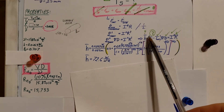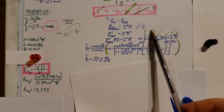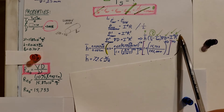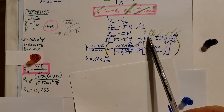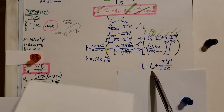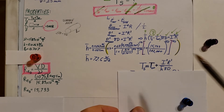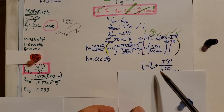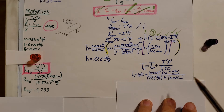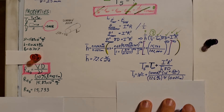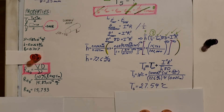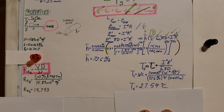Now that we have h, we go back and solve for Ts from the energy balance equation. With all components known, plugging everything in gives us a surface temperature of 27.54 degrees Celsius.